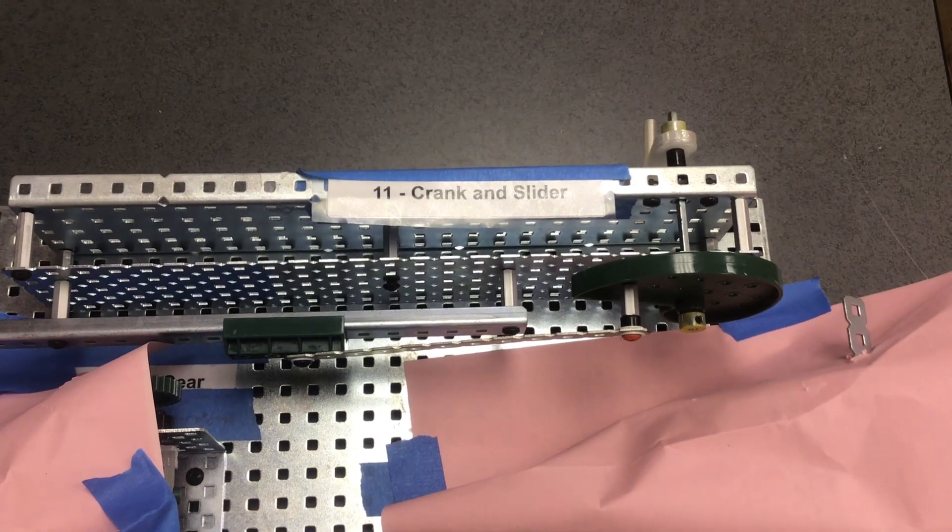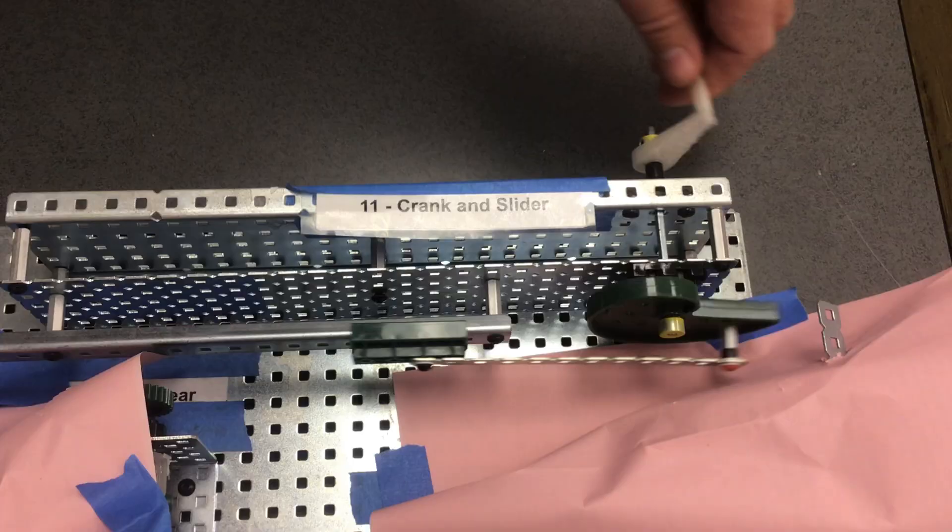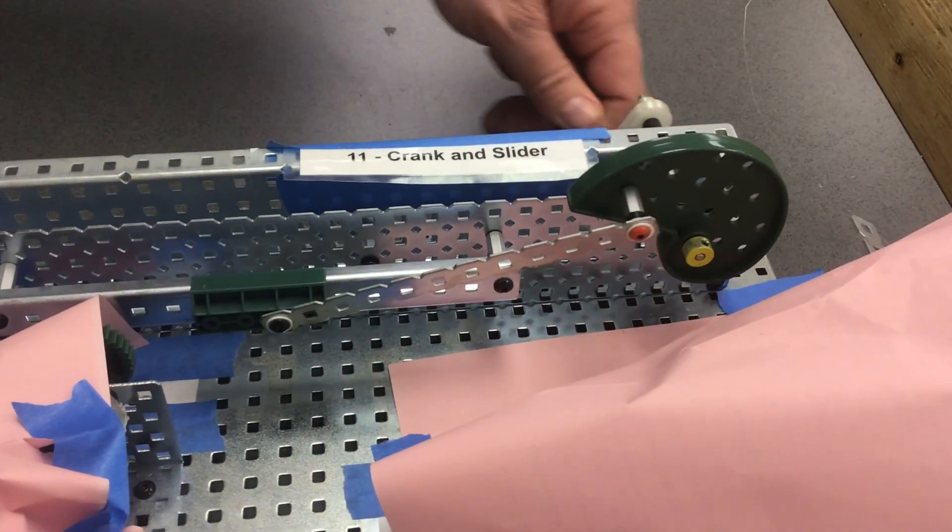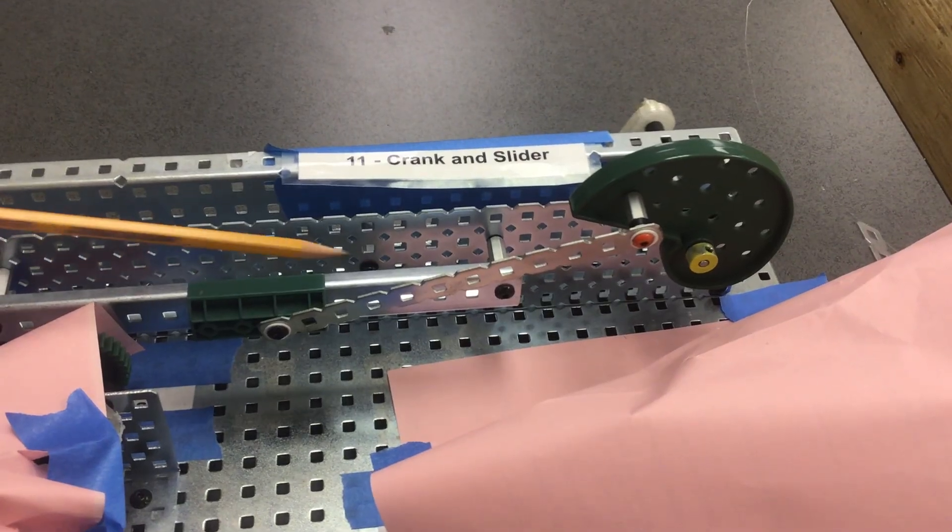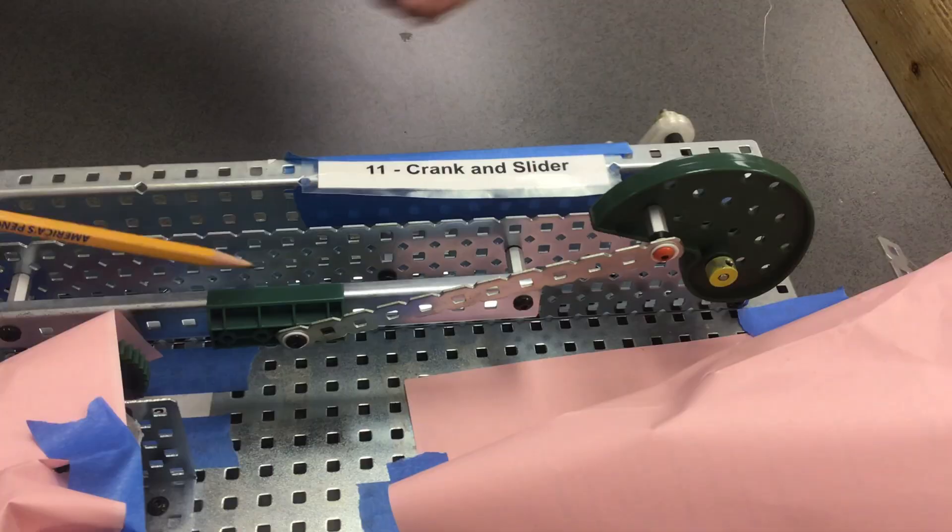Now let's talk about the type of movement. The input movement is rotary. The output movement goes back and forth, making it reciprocating.